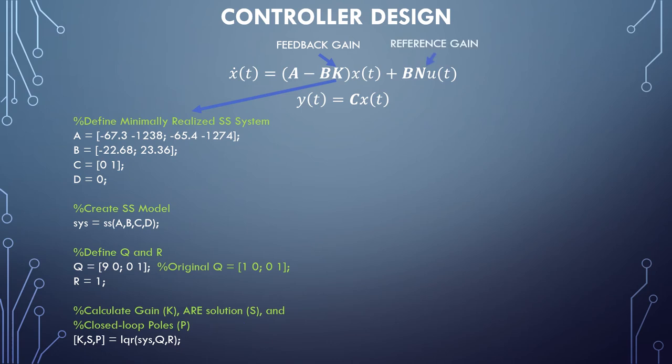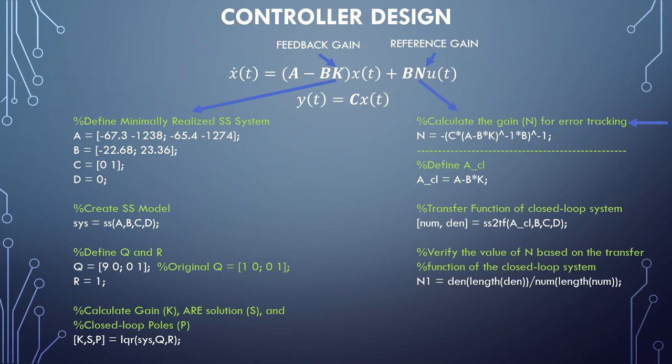Next, we need to calculate the reference gain. This can be accomplished a couple of ways. The first is by direct computation. The second is by first defining the closed loop A matrix and converting the state space system into a transfer function. Then the gain is calculated by evaluating the inverse of the transfer function as S goes to zero. This line of code simply divides the last term in the denominator by the last term in the numerator to accomplish that.